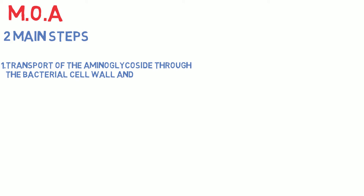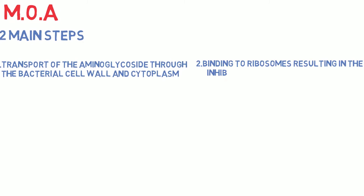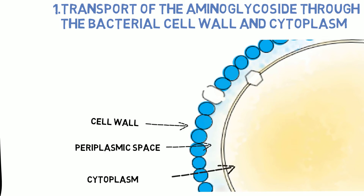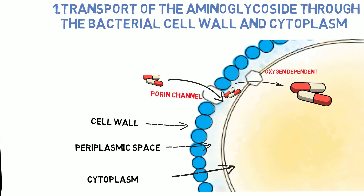The mechanism of action of aminoglycosides can be explained in two main steps: first, transport of the aminoglycosides through the bacterial cell wall and cytoplasm; and second, binding to the ribosome resulting in inhibition of protein synthesis. Aminoglycosides transfer through the cell wall to the periplasmic space via the porin channel, and are then transported from the periplasmic space to the cytoplasm by an oxygen-dependent active process.